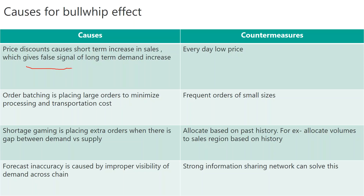The first cause is price discounts, which cause a short-term increase in sales and give false signals of long-term demand increase. For example, when a promotion scheme is started by the marketing team, there will be a short-term sales spike which triggers demand amplification upstream. The countermeasure is an everyday low price strategy — promotions should not happen too often, otherwise they distort the demand signal across the supply chain.